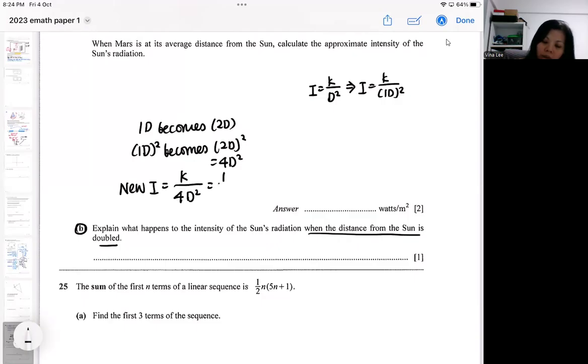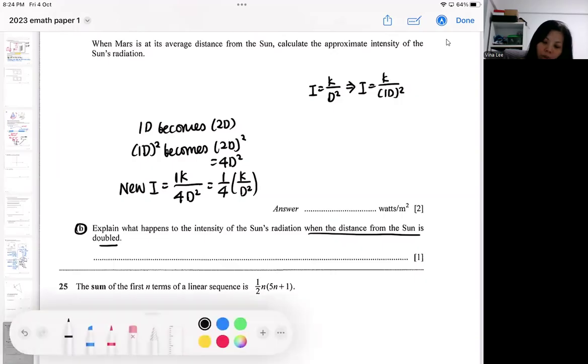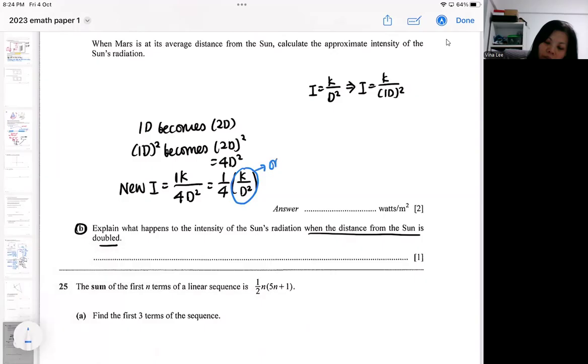You organize the expression a bit. That means it's 1 over 4 times k over d square. So when you hit this part, you realize that this is your original intensity.